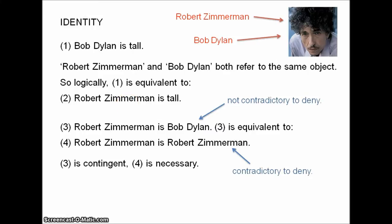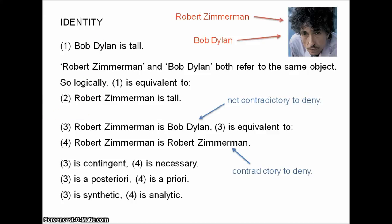Secondly, and this problem is very similar to the first: 'Robert Zimmerman is Bob Dylan' is a posteriori — the way we find out it's true is by empirical evidence; we have to consult the external world. Whereas 'Robert Zimmerman is Robert Zimmerman' is a priori — we can see it's true by reason alone. Similarly, the first is synthetic: it's true in virtue of the way the world is. Whereas the second is analytic: it's true simply by definition. So there seems to be a very big difference between these two statements, and yet this difference is created by doing what should be a perfectly reasonable manoeuvre, on the assumption that names work by referring to things. So that's our first puzzle.